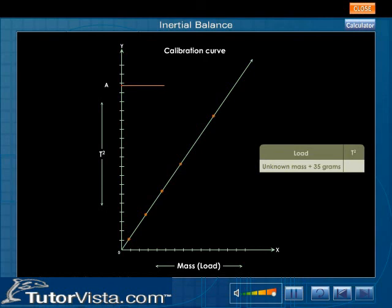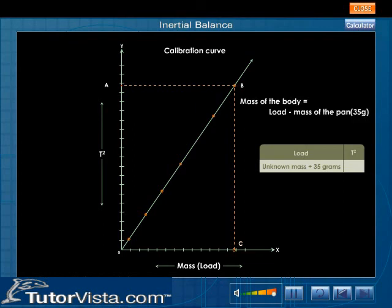Draw a line from A parallel to the x-axis such that the line cuts the calibration curve at B. Now draw a line from B parallel to the y-axis such that the line cuts the x-axis at C. The point C represents the load. To obtain the mass of the body, subtract the mass of the pan from the load.